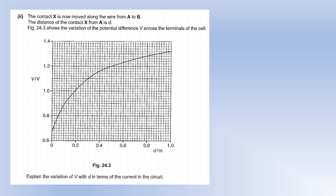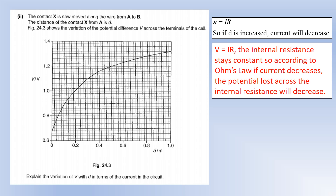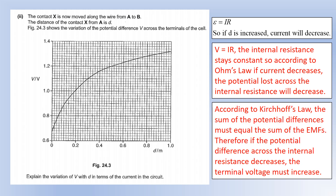As contact X moves from A to B (distance d increases), total resistance increases so current decreases. With constant internal resistance, less current means less potential lost across the internal resistance. By Kirchhoff's voltage law, if the internal voltage drop decreases, the terminal voltage (potential difference across the external resistance) must increase — which matches the graph.